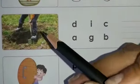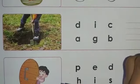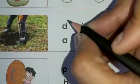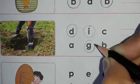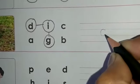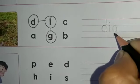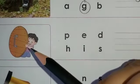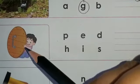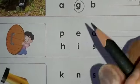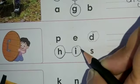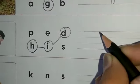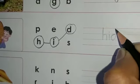Now come on to the next picture — what is a man doing over here? He is digging. The word is dig. D-I-G. We encircle D, then I, and here is G. We connect them — D-I-G — and write the word dig. Next picture — a child is trying to hide behind this. The word is hid. H-I-D. We encircle H, I, and D. H-I-D, hid. We write it down. H-I-D, hid.